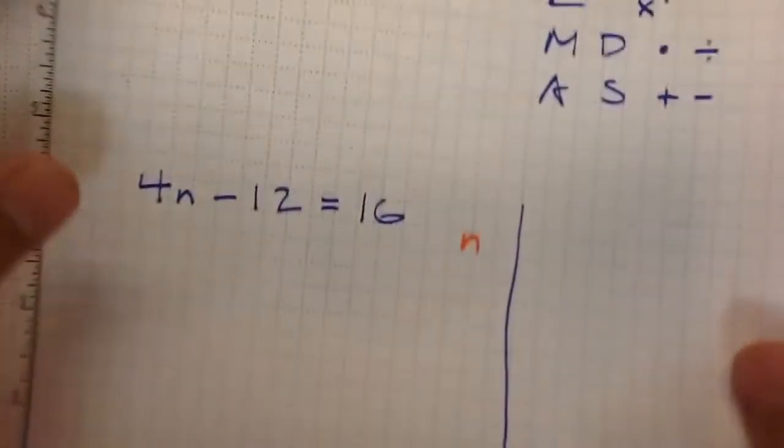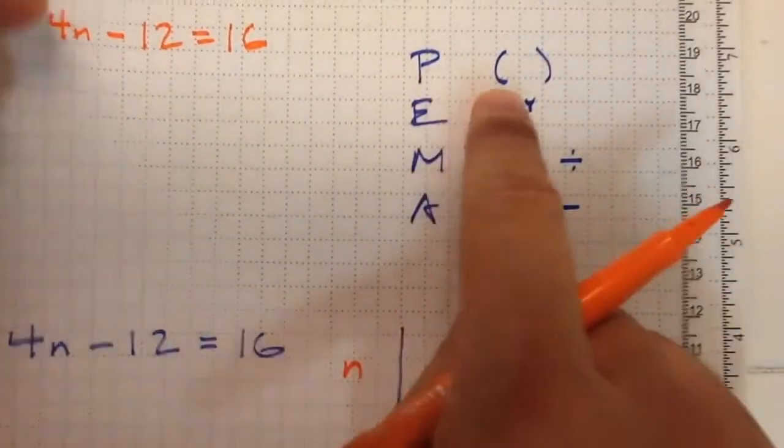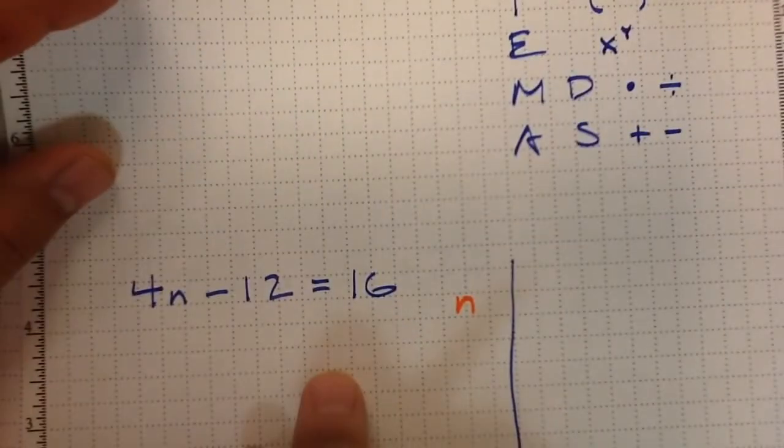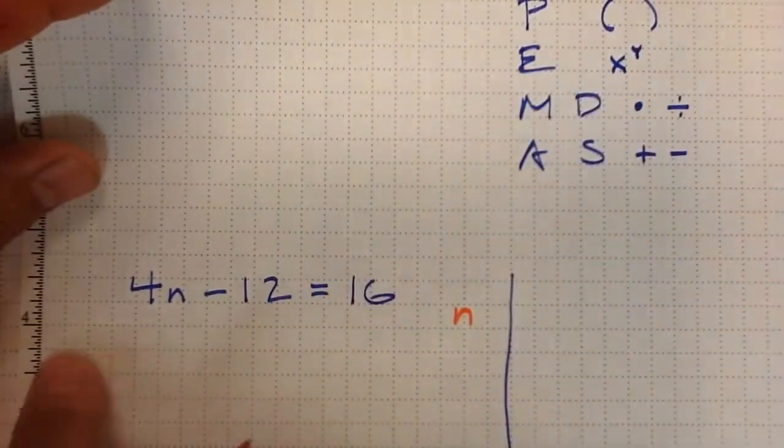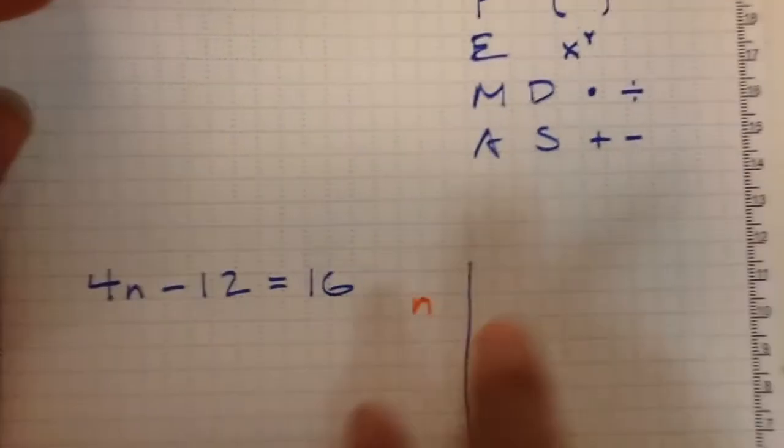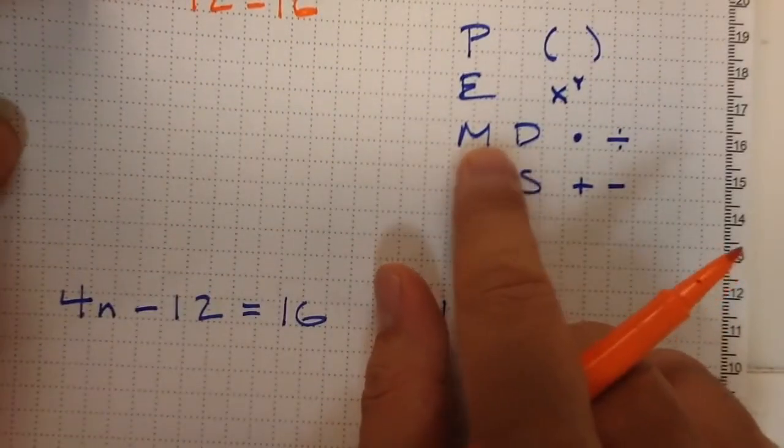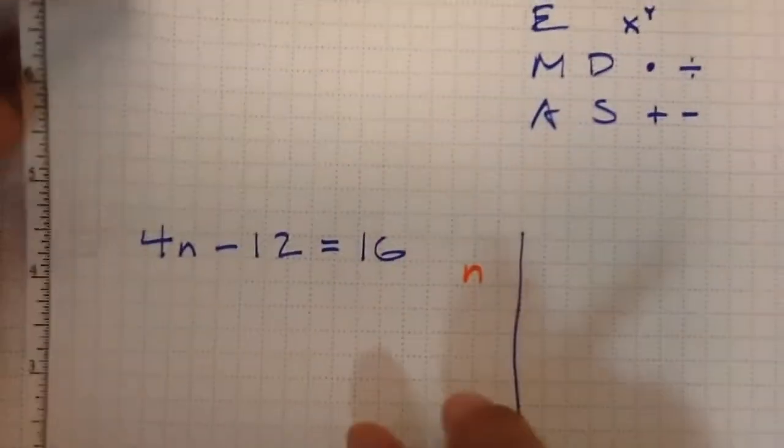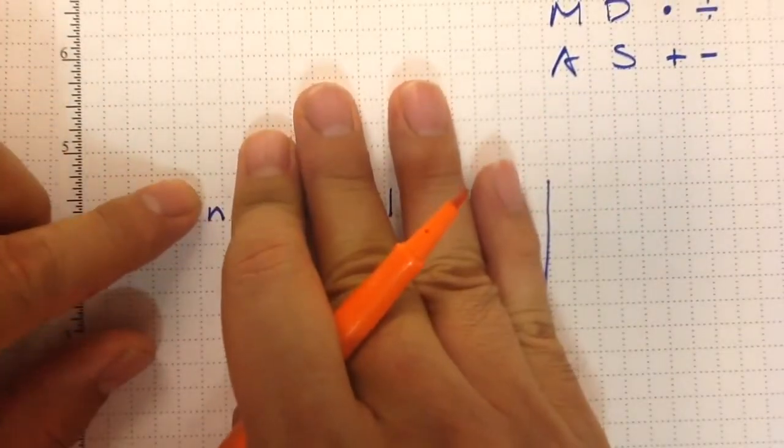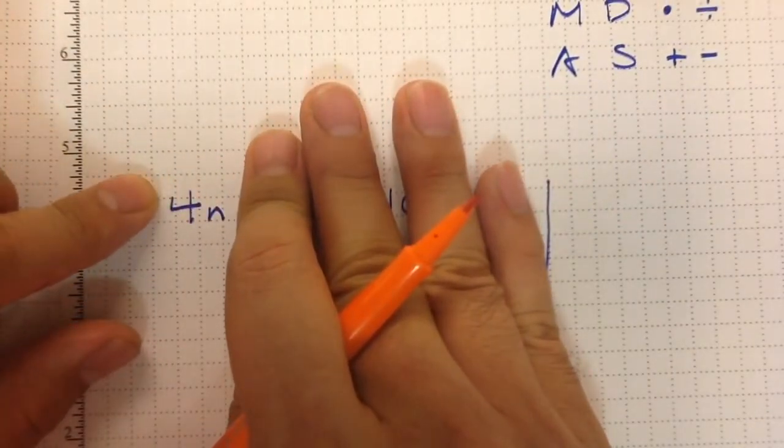According to order of operations, the first thing they would have done is any parentheses, which there are none - we took care of that earlier by simplifying. Then any exponents, but there's no exponents here. So next, according to the order of operations, multiplication and division would have happened next. So what would have happened is they would have taken n and multiplied by 4.